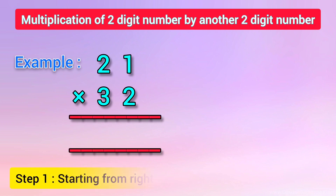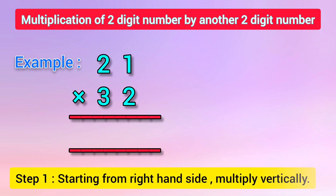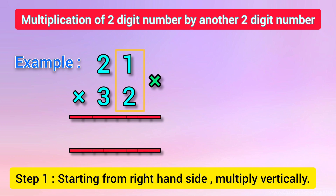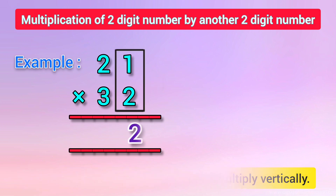In the first step, starting from the right-hand side, we need to vertically multiply the numbers on the right-hand side. That is, 1 is multiplied by 2. When 1 is multiplied by 2, we get the answer as 2. Now the answer 2 is written down.